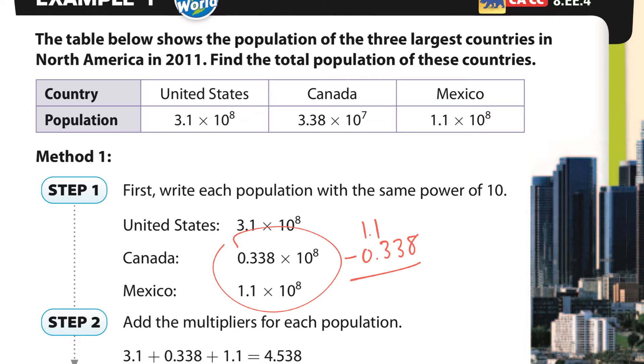So I'm going to take 1.1 minus 0.338. And so we would have zeros here. This is 2. And that's 9 minus 3 is 6. And this is 10 minus 3 is 7. So I have 0.762.